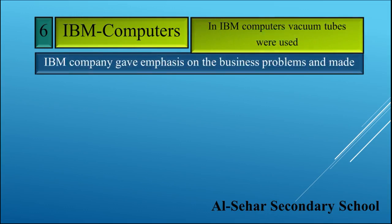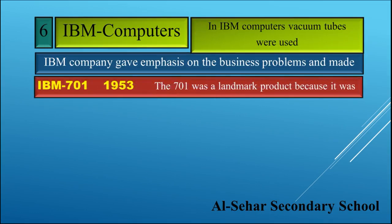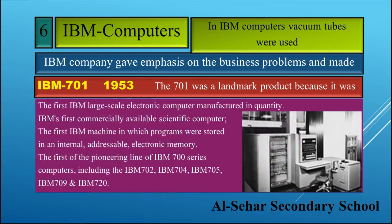In IBM computers, vacuum tubes were used. IBM gave emphasis on business problems and made the IBM 701 in 1953. The 701 was a landmark product because it was the first IBM large-scale electronic computer manufactured in quantity — IBM's first commercially available scientific computer, and the first IBM machine in which programs were stored in an internal addressable electronic memory. It was the first of the pioneering line of IBM 700 series computers.